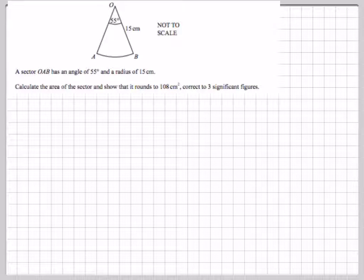The sector OAB has an angle of 55 degrees and a radius of 15. Calculate the area of the sector, show that it rounds to 108 centimetres squared, correct to three significant figures.